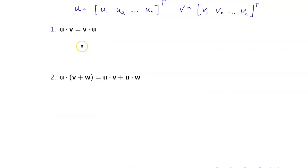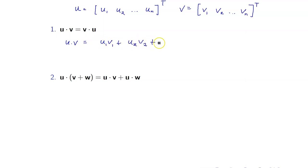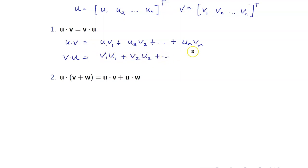I will be proving the first two properties. First, let us check that the dot product is really commutative. Recall that u is a column vector, but I wrote it as a row vector, so I have the transpose. By definition, u dot v is equal to u1*v1 plus u2*v2 and so on up to un*vn. However, v dot u is the product of the entries of v and u, which is v1*u1 and so on. Since multiplication is commutative, these two expressions are equal.